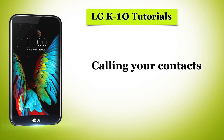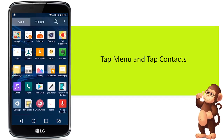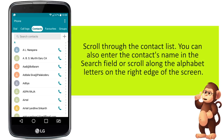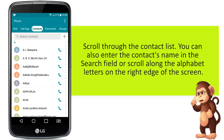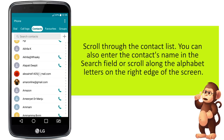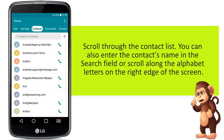Now, let us see how to call your contacts. Tap menu, and tap Contacts. Scroll through the contact list. You can also enter the contact's name in the search field, or scroll along the alphabet letters on the right edge of the screen.